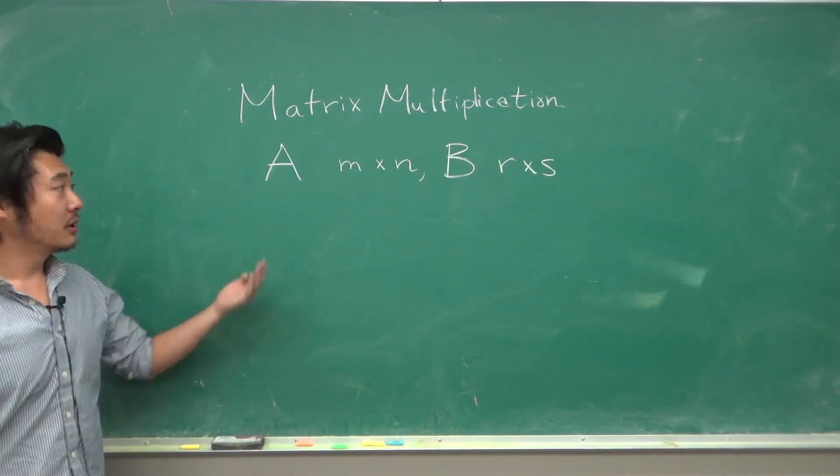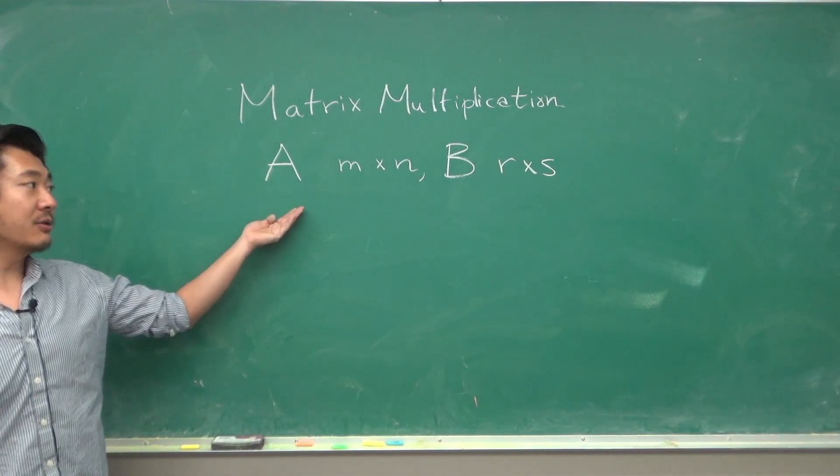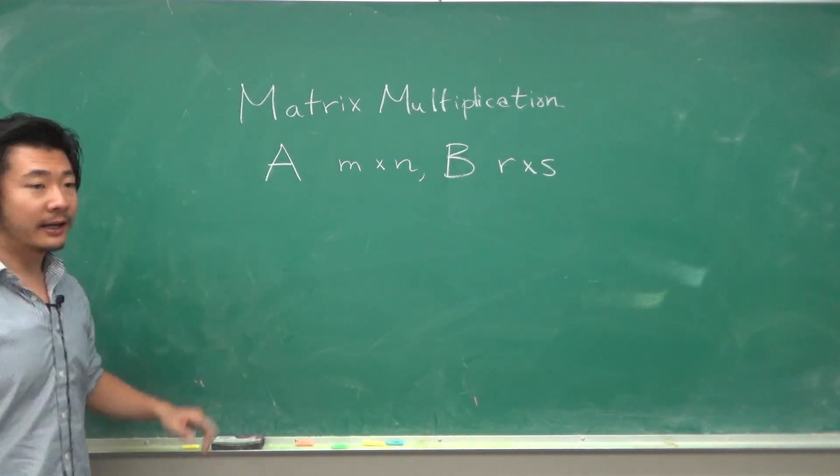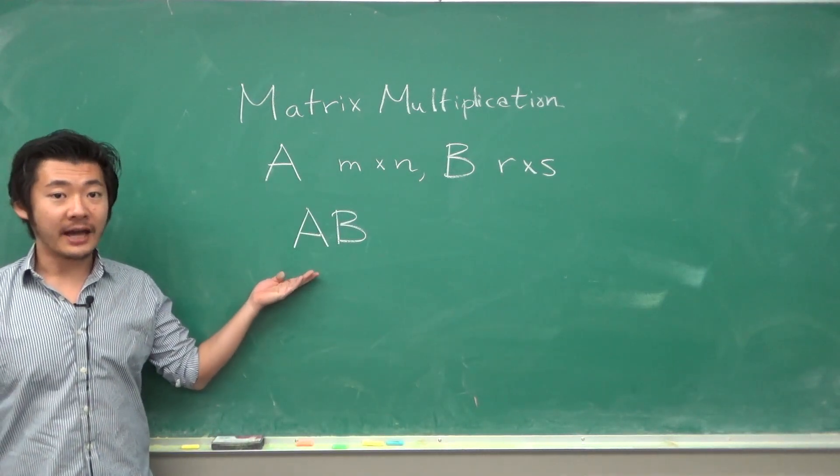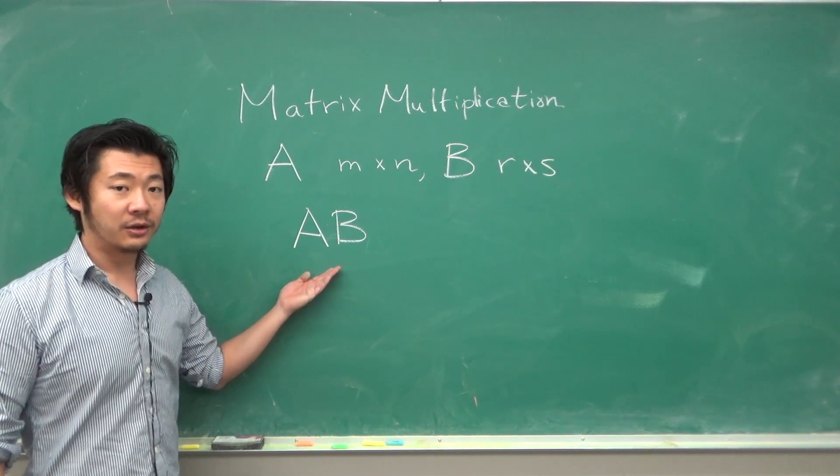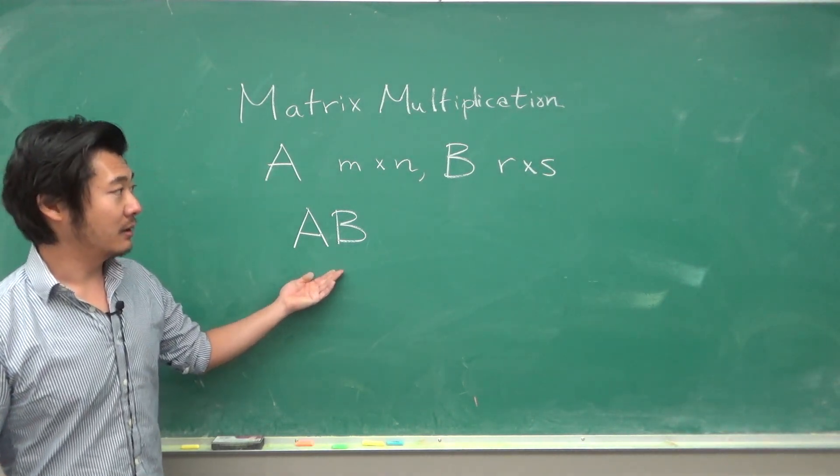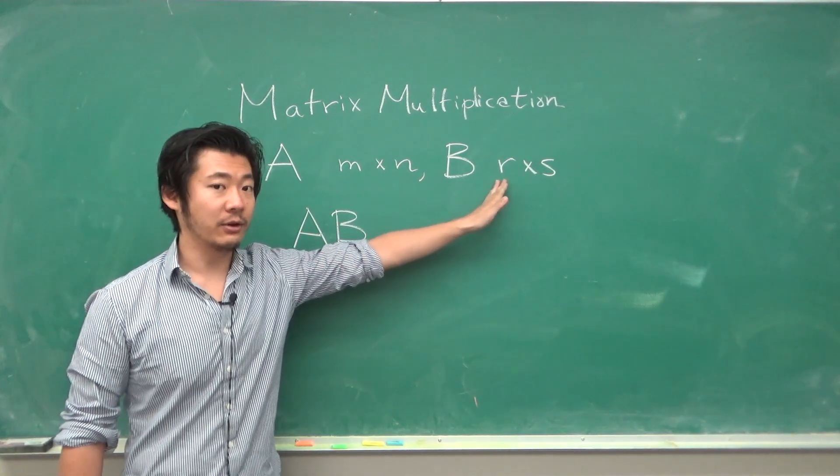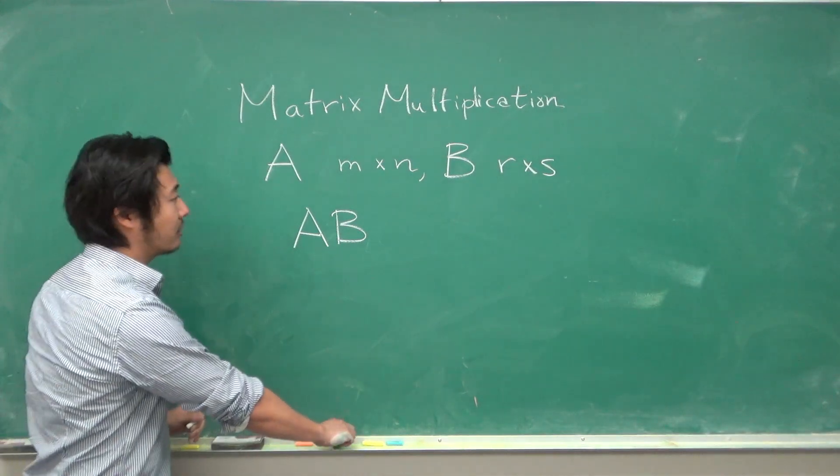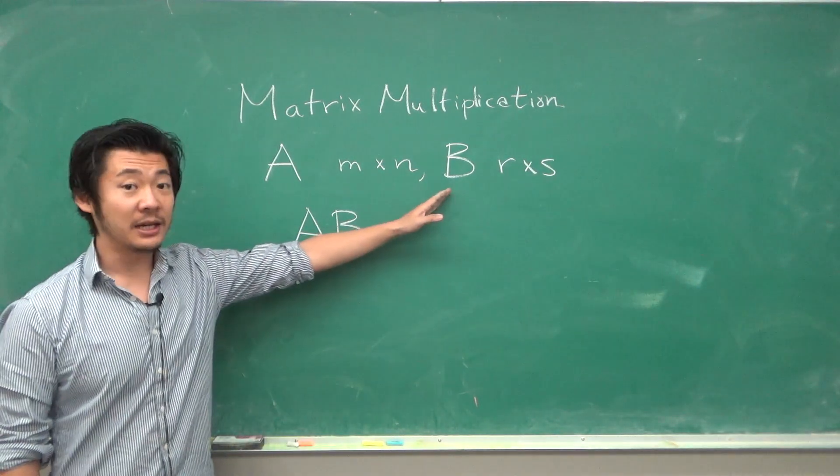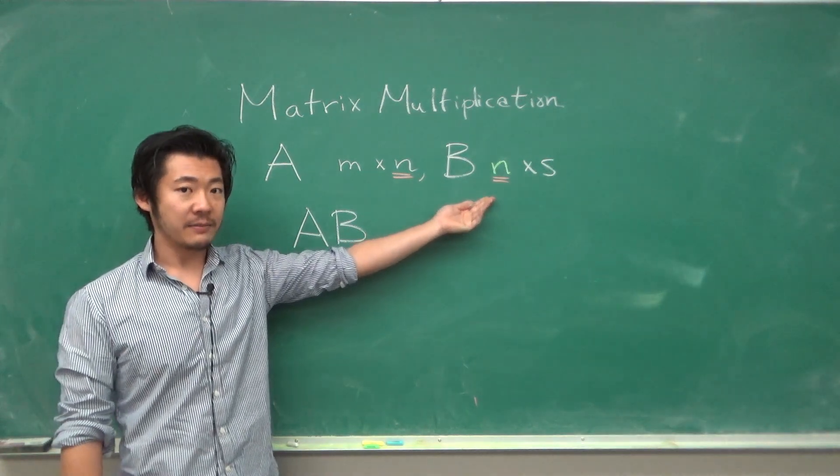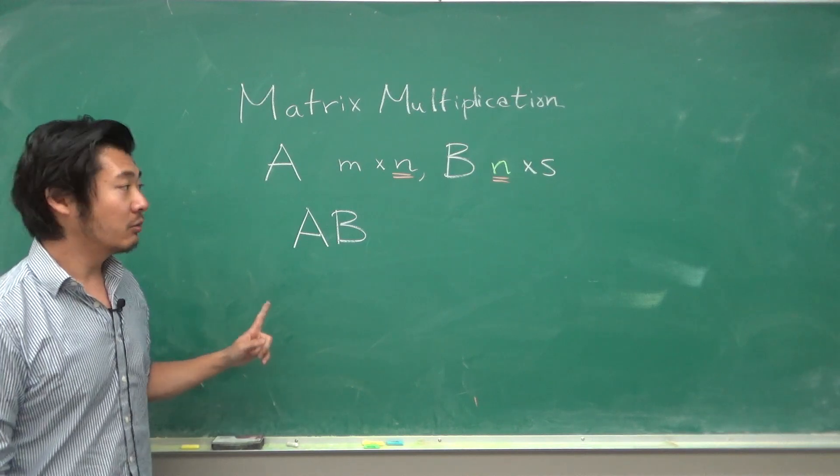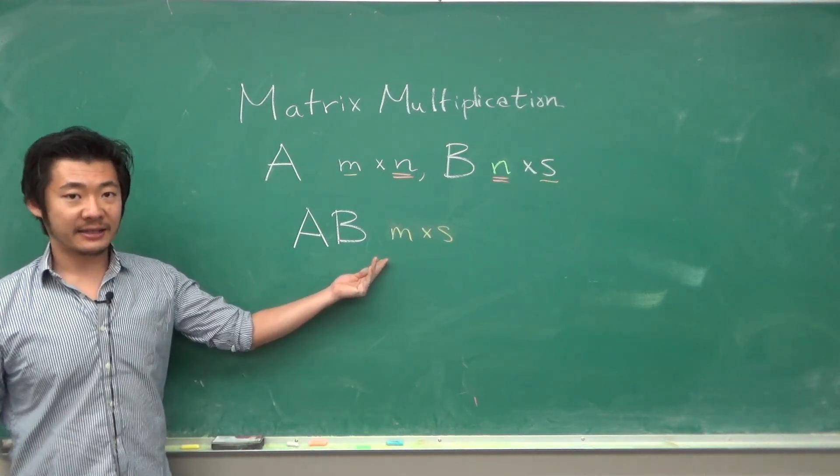What if we want to define a multiplication of two matrices? Suppose A is an m by n matrix and B is an r by s matrix. Can we define their product A times B? Well, not always. Such a thing can only be defined when we make sure that the columns on the left side are equal to the rows of the right side. So you would want to make sure that the matrix B is actually an n by s matrix so that these two numbers match up. Then the resulting matrix will be an m by s matrix.